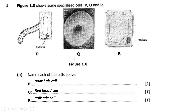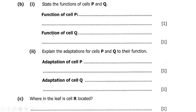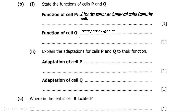The function of cell P, the root hair cell: we say it absorbs water and mineral salts from the soil. The function of cell Q, the red blood cell: we say it transports oxygen around the body. Roman numeral two says explain the adaptations of cells P and Q to their function.